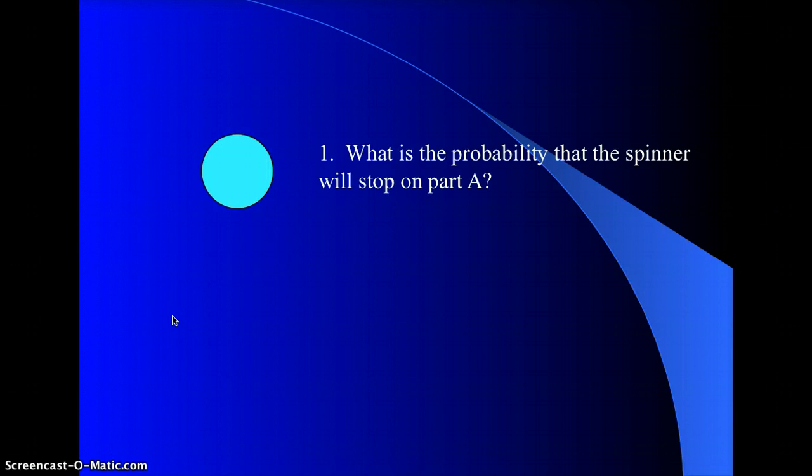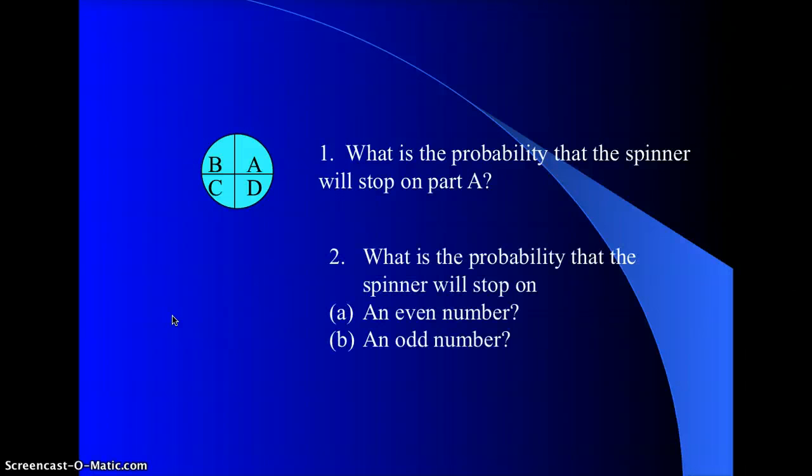So if we were to look at the spinner, the probability that the spinner will stop at A. We have a total of four spots on our spinner. Go ahead and write down the answers, because this should be a review from last year. Let's look at the next one. The probability that the spinner will stop on an even number is the first question, and then if it will stop on an odd number is the second question. Pause this and answer those two.